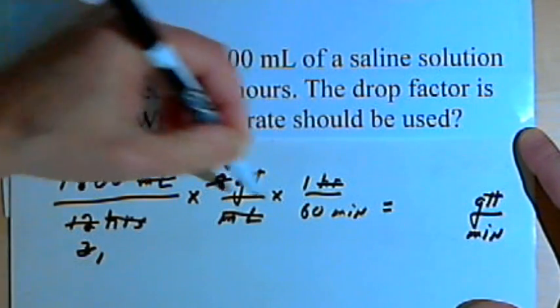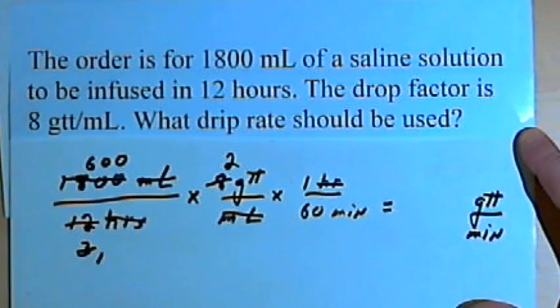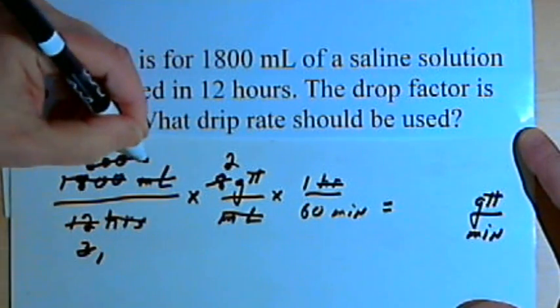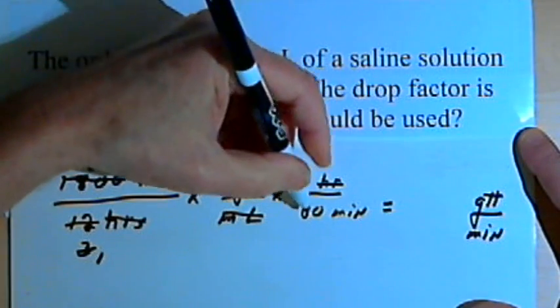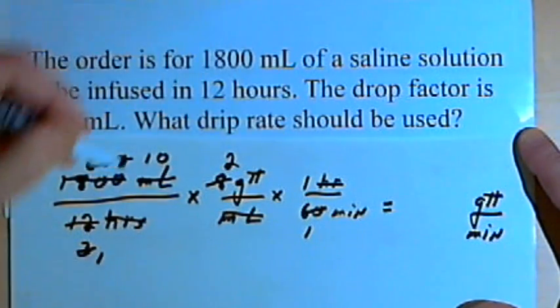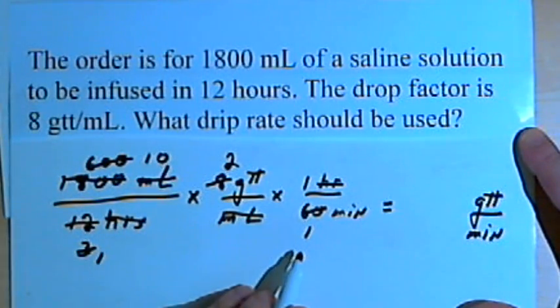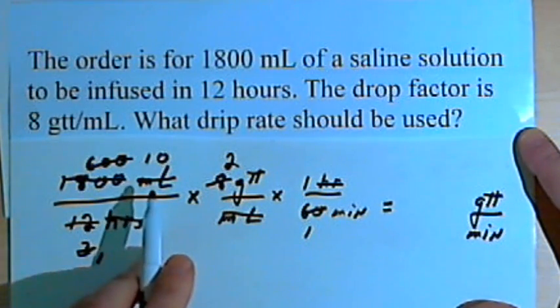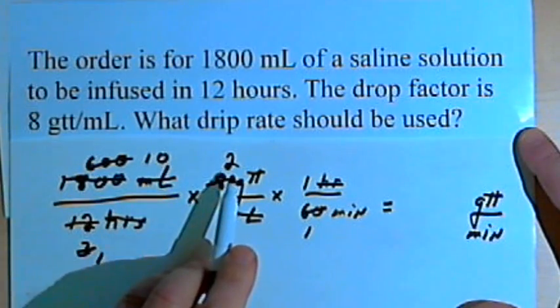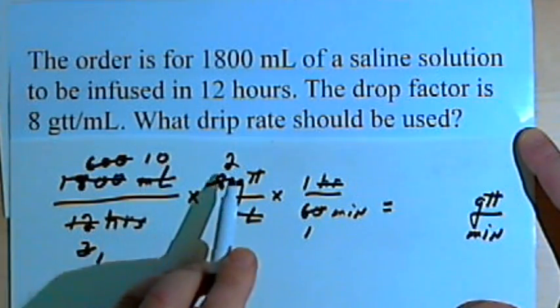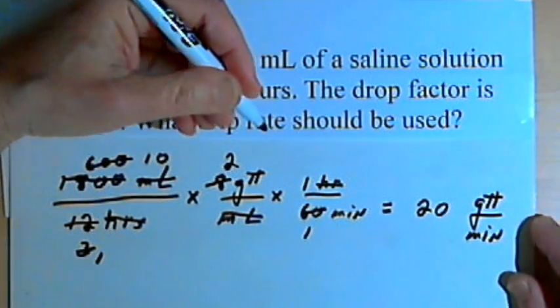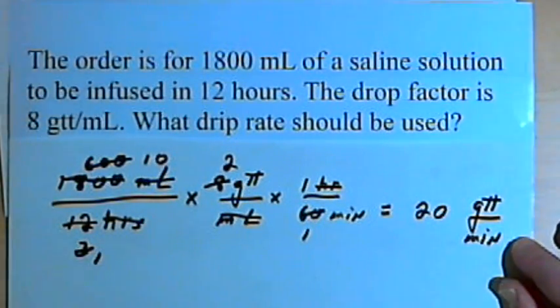Then I've got 600 and 60. Let's divide both by 60. 600 divided by 60 is 10, and 60 divided by 60 is 1. I've just got 1's in the denominator. So let's multiply the numerators: 10 times 2 gtt is 20. I end up with 20 gtt, or 20 drops per minute.